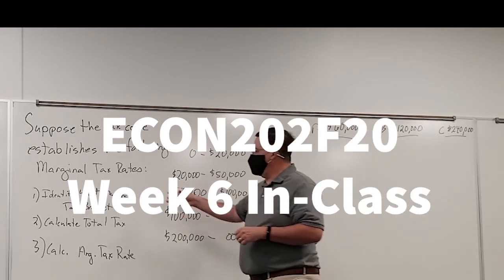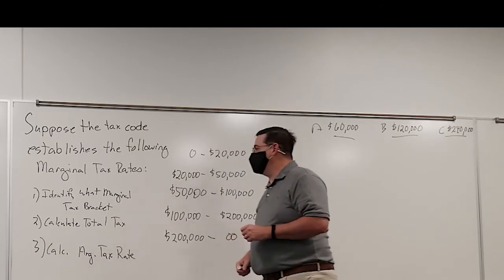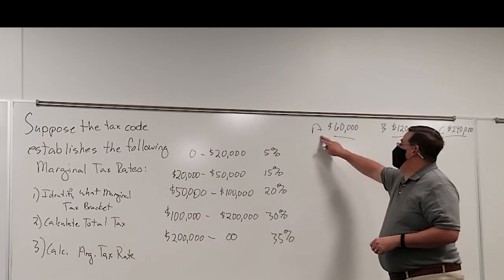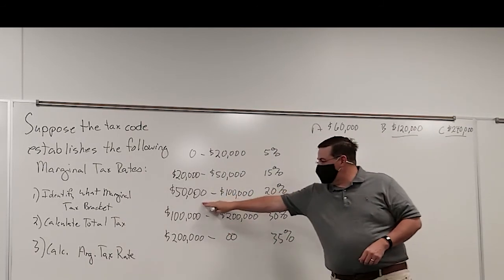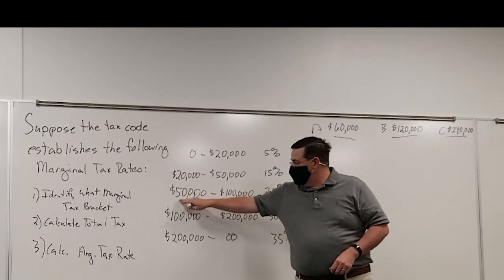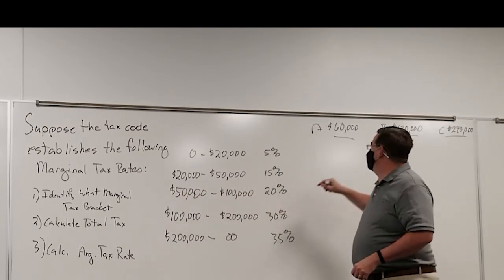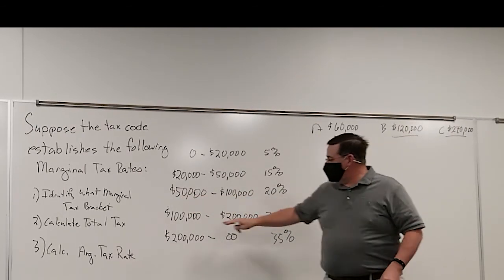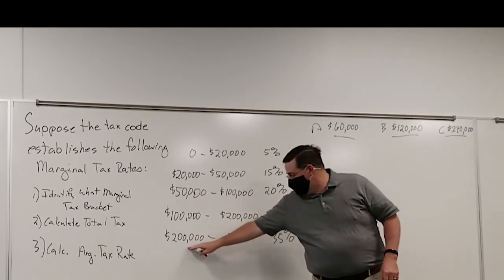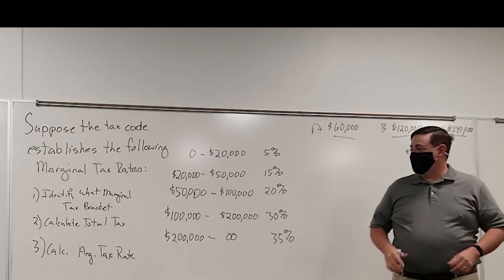So for the first part, we have to identify which marginal tax bracket we're in. Family A is going to be in this marginal tax bracket because their income is between $50,000 and $100,000. Family B is going to be in this tax bracket and family C would be in this tax bracket. Simple enough.